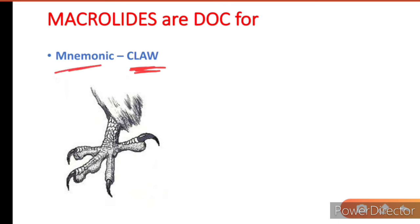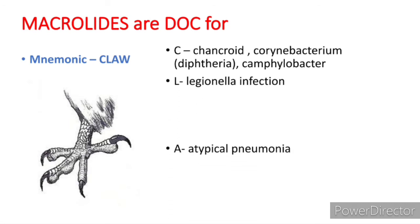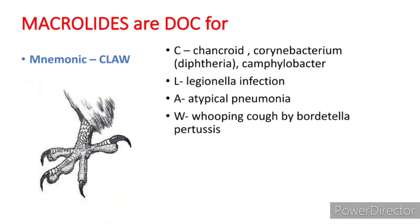Macrolides are the drug of choice for atypical pneumonia. They are also the drug of choice for chancroid, Corynebacterium (which causes diphtheria), Campylobacter, Legionella infection, atypical pneumonia, and whooping cough caused by Bordetella pertussis.